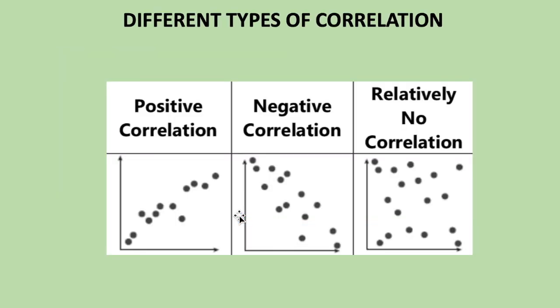So these are the different types of correlation. There can be positive, negative, or relatively no correlation. In a positive correlation, when one axis increases, the other axis also increases. So in positive correlation, both axes are increasing at the same time, and the data points are moving in this general direction.